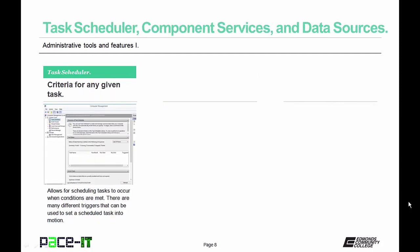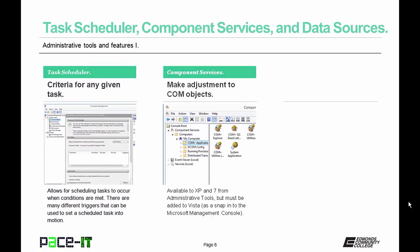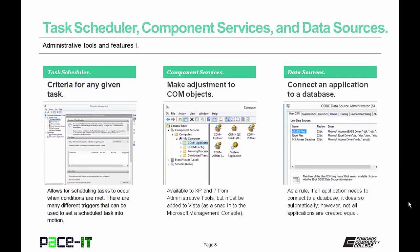Task scheduler allows the user to schedule tasks to occur when certain conditions are met, with many different triggers that can be used. Component services allow the user to make adjustments to COM objects — available in Windows XP and 7 from administrative tools, but in Vista you need to add it as a snap-in into the Microsoft Management Console. Data sources connect an application to a database; most do so automatically, but not all applications are created equally and some need assistance. The print management applet manages and controls the behavior of printers and their drivers, and is great for managing networked printers.